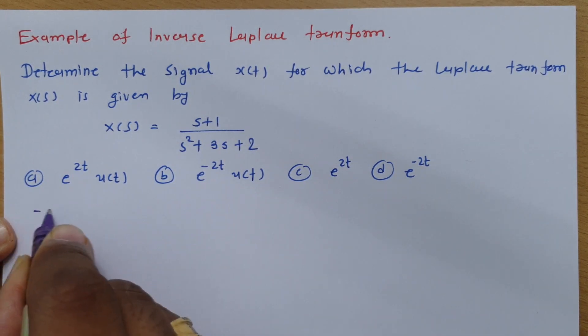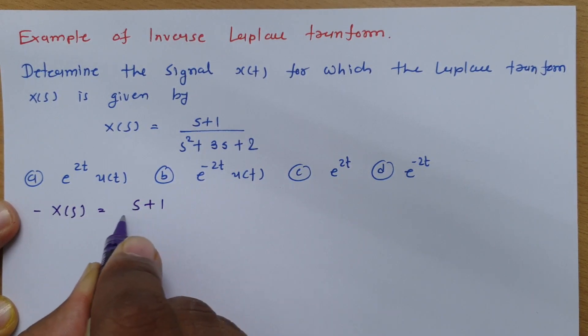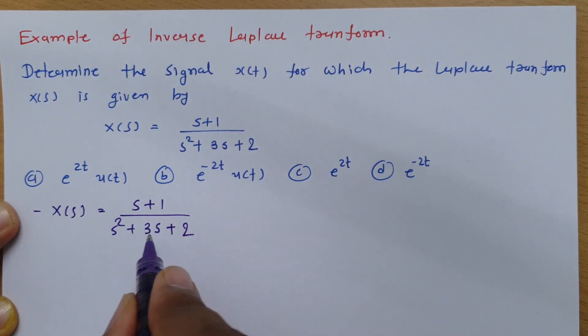So X(s) that is given to us is (s+1)/(s²+3s+2). Now if you observe here, 3 has two parts: 2×1 means 2+1.